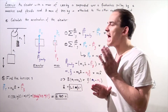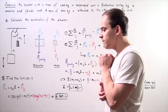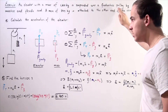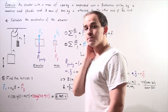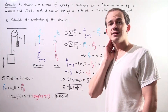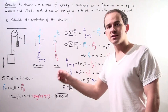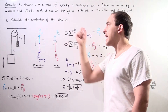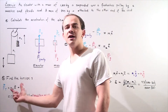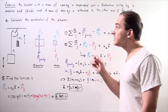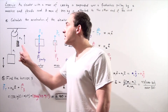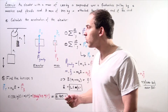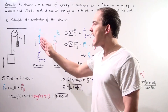This example deals with the Atwood machine. We have an elevator with a mass of 1,000 kilograms suspended over a frictionless pulley by a massless and flexible cord. A mass of 800 kilograms is attached to the other end of the cord. By neglecting the mass of the cord and friction in the pulley, we assume the tension force remains undiminished throughout the cord.